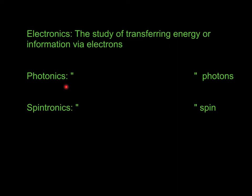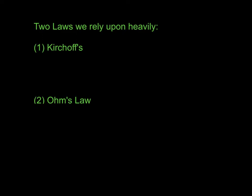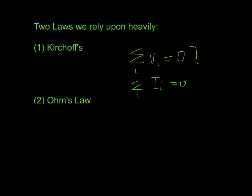Let's move on to our fluid flow analogy. Two laws we rely upon heavily are Kirchhoff's rules. They can be written simply as: the sum of voltages around a loop is zero. You've seen this before. There's also the junction rule, which is the sum of currents into a junction is also zero. We actually use these implicitly but not explicitly when we do electronics — we're going to dump these calculations really fast. They're always implicit and we use them all the time, but the kinds of calculations you're used to doing, like what current flows through a resistor using these rules, we're not going to do a lot of.